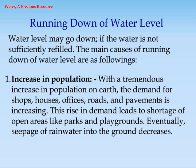Running down the water level. Water level may go down if the water is not sufficiently refilled. The main causes are: 1. Increase in population. With a tremendous increase in population on earth, the demand for shops, houses, offices, roads, and pavements is increasing. This rise in demand leads to shortage of open areas like parks and playgrounds. Eventually, seepage of rain water into the ground decreases.